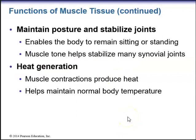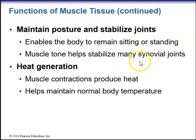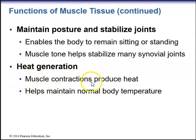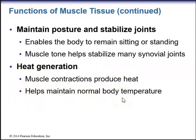Muscle tissue also helps maintain posture and stabilize joints, enabling the body to remain sitting or standing. Muscle tone helps stabilize many synovial joints. Muscle tissue is also important for heat generation — muscle contractions help produce heat and help maintain normal body temperature as part of the body's homeostatic mechanisms.